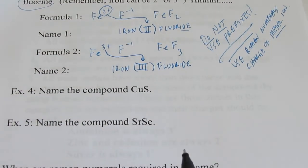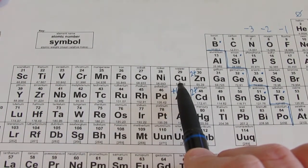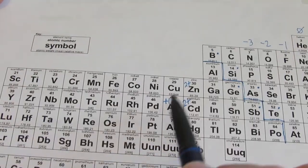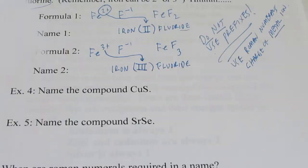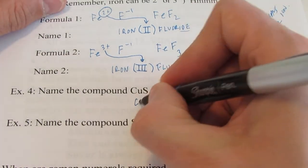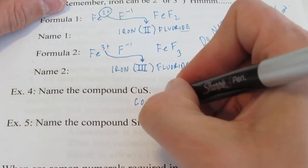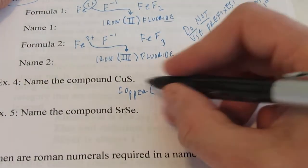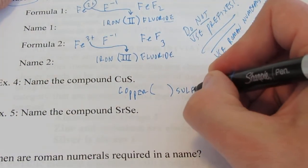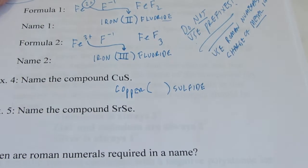Let's do one more, and we'll call it good on this video. CuS. Now, let's see. Copper is one of those that can have more than one charge. It's one of those transition metals. Copper can be 1 plus, or it could be 2 plus. So we're going to have to use Roman numerals for it. So we're going to start out with copper and leave a space for Roman numerals. And then we're just going to end with sulfide.